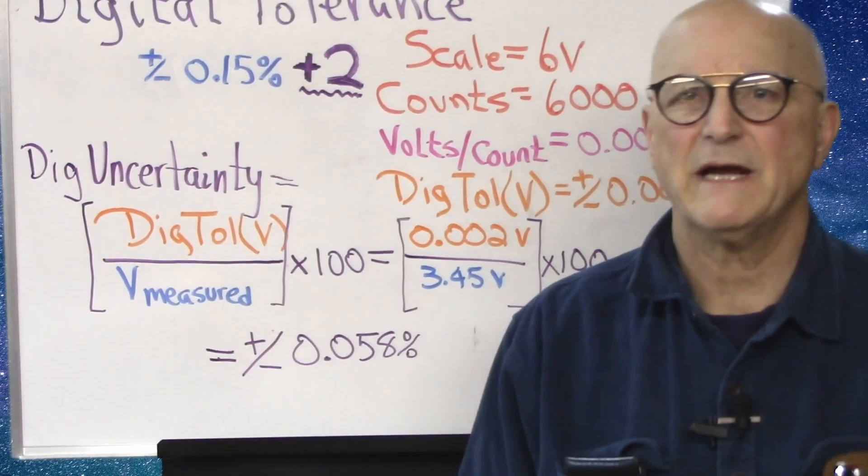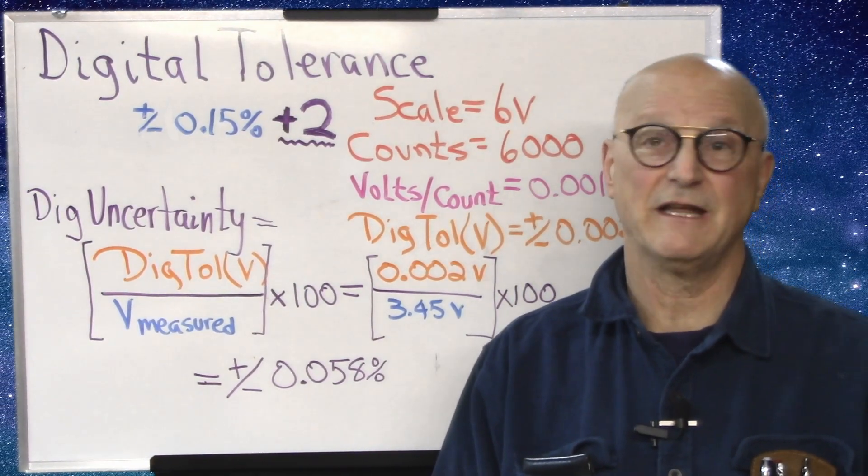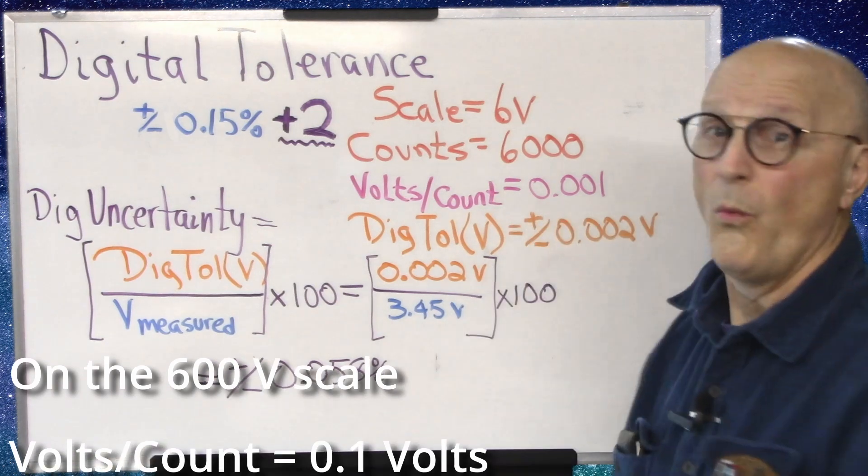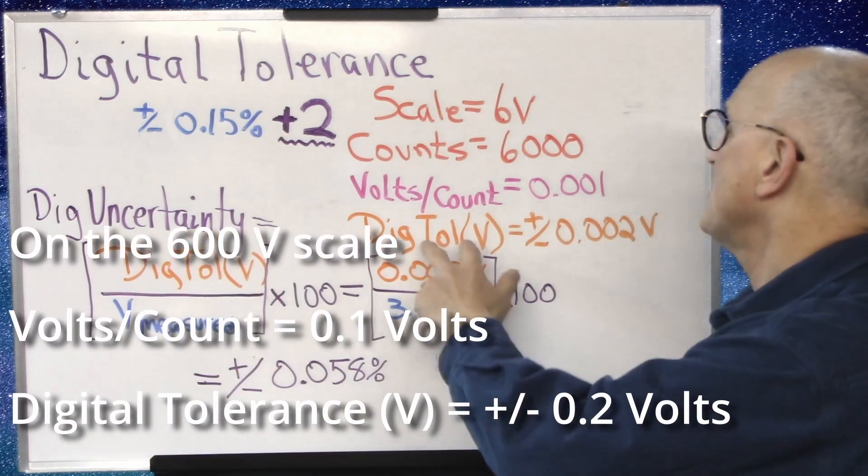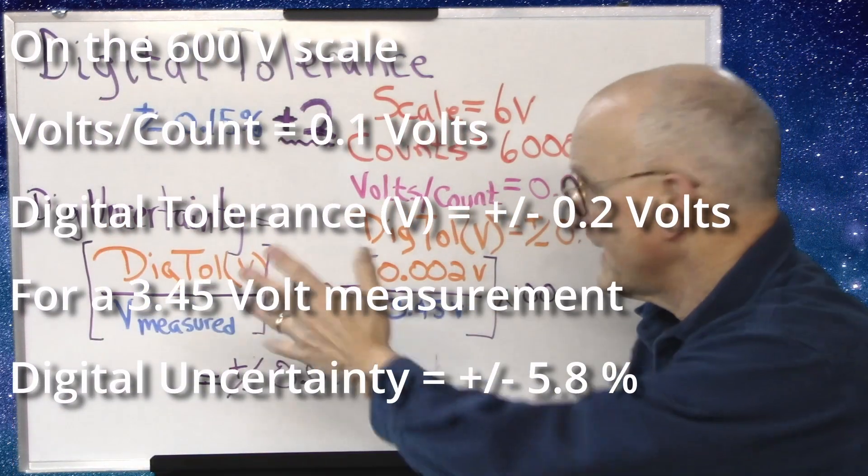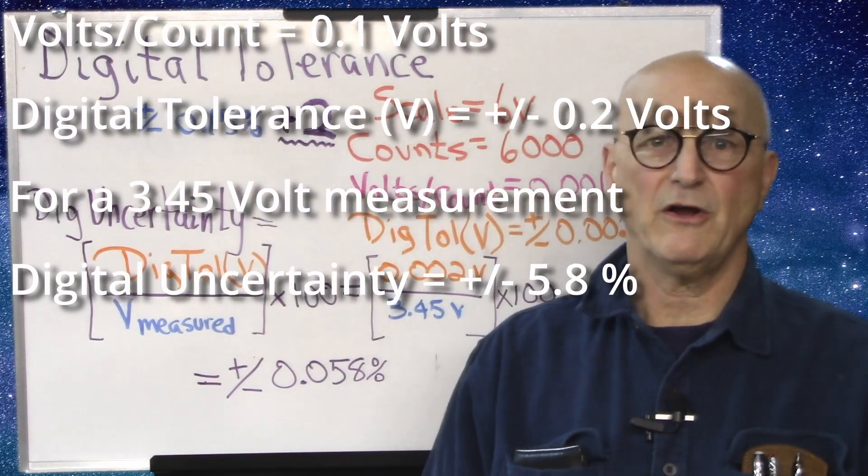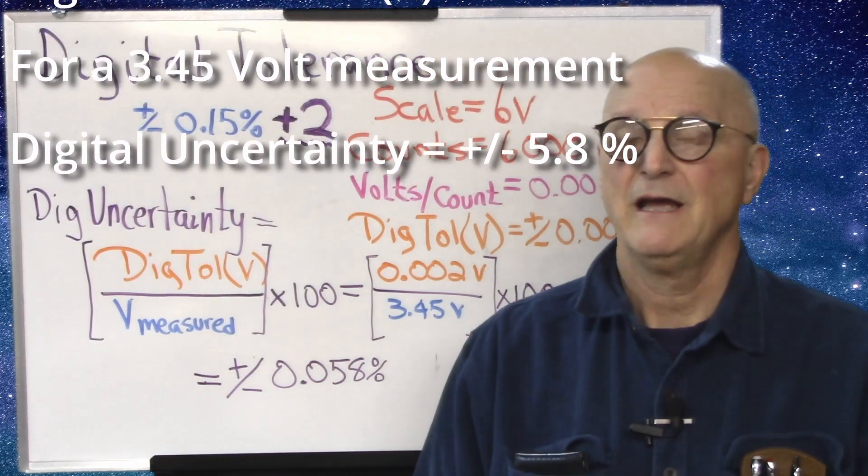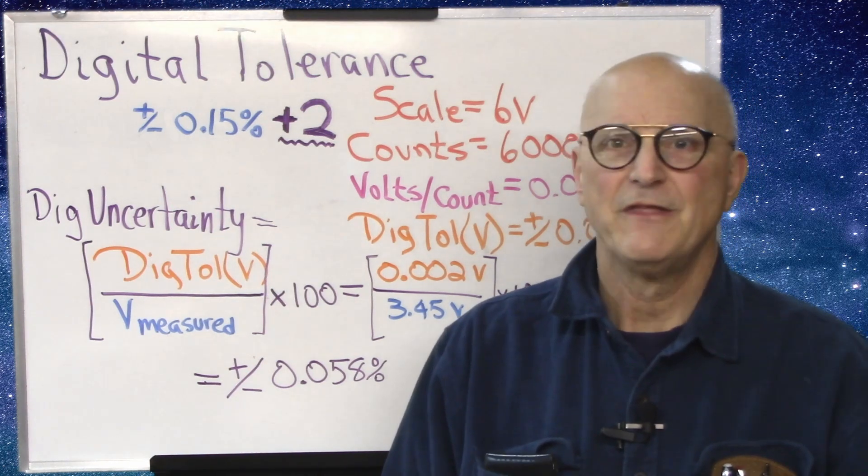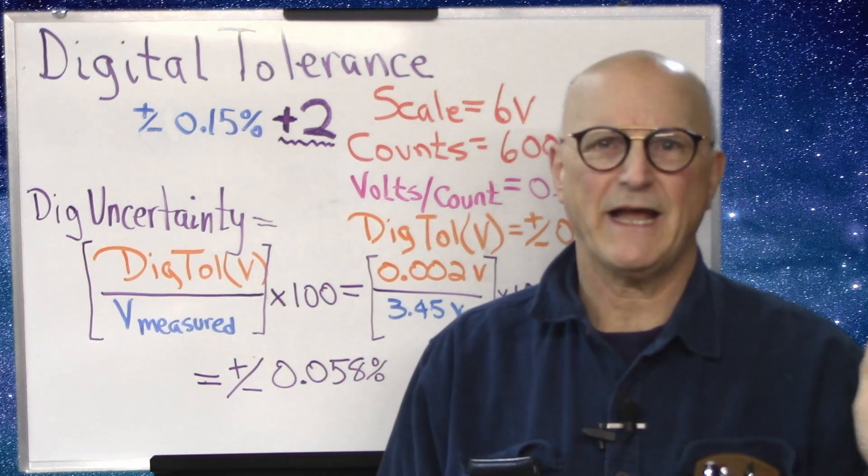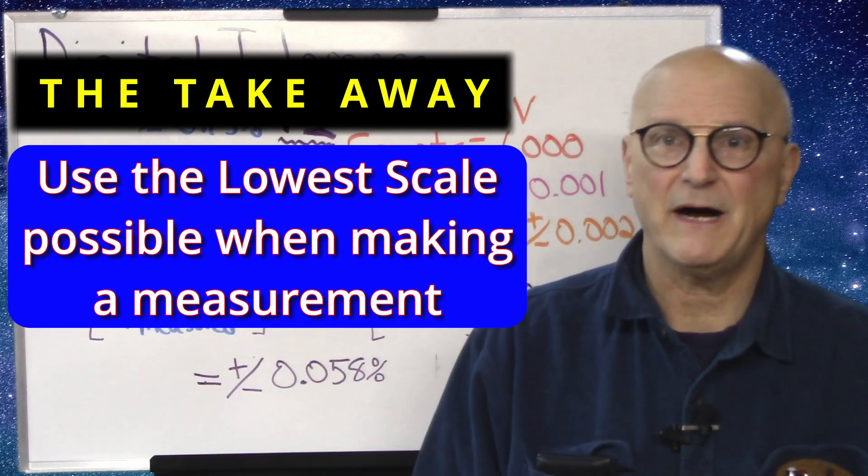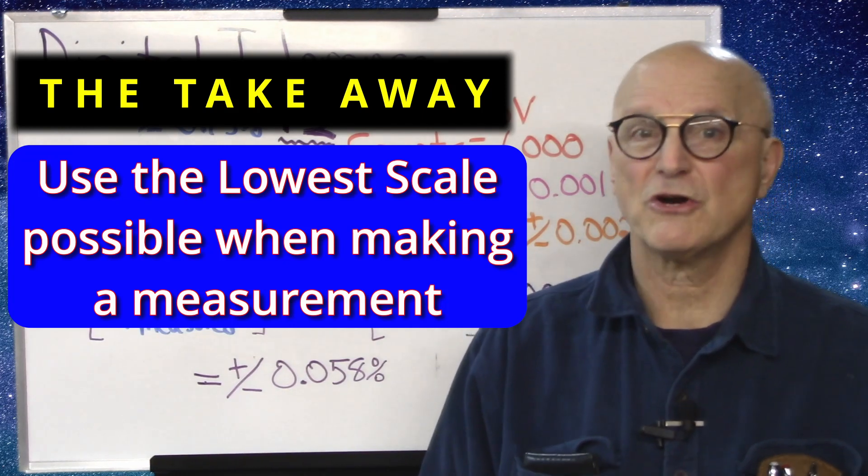Well, what would happen if we were measuring the same 3.45-volt signal using the 600-volt scale? Each count would be equivalent to 0.1 volts. Our digital tolerance in voltage would be plus or minus 0.2 volts. We go through this calculation, and we discover that we could be off by as much as 5.8%. And while the analog accuracy is still plus or minus 0.15%, the digital measurement accuracy is totally out of bounds at almost 6%. So the takeaway from here is to use the lowest scale possible to minimize the effects of the digital measurement uncertainty.